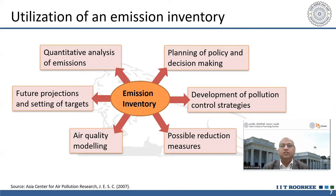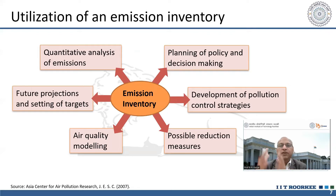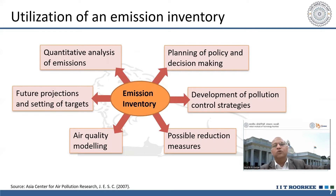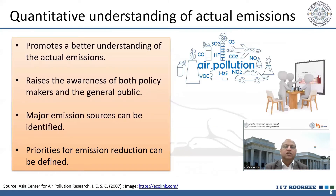For future projections, emission inventory lets you estimate what will happen after 20 years when certain policies are implemented. For example, if 20% of vehicles are shifted to electric or battery-operated vehicles — removing those fossil fuel vehicles from the road — you can calculate how much emission will be reduced. This allows quantitative analysis of emissions and the impact of different policies.